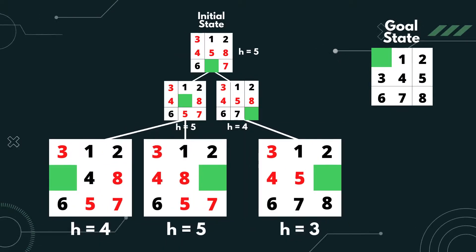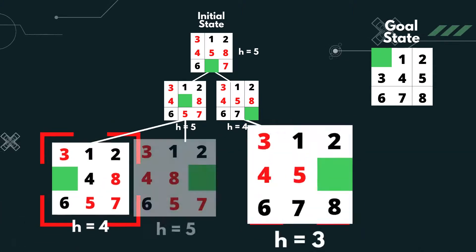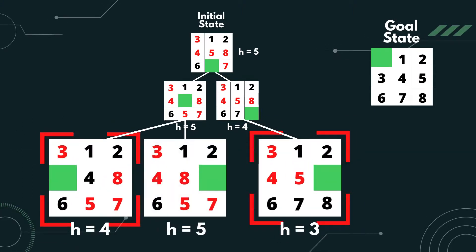When generating a new state, we only choose to move misplaced tiles. This is to ensure that the heuristic value does not increase. From the 3 generated states, choose 2 with the lowest heuristic values.